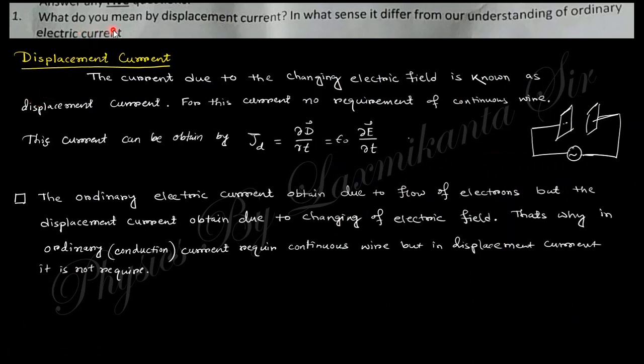The first question: what do you mean by displacement current? Displacement current is when you consider a parallel plate capacitor with oscillating voltage, the electric field in this region changes with time. In that case there is an induced current and this current is known as displacement current, the current due to changing electric field. When there is a change in electric field, the displacement current is expressed as epsilon dE/dt.